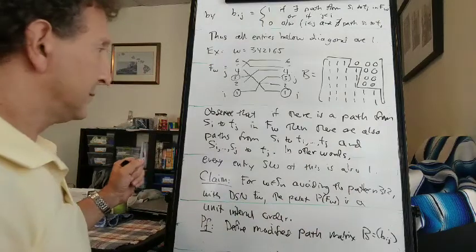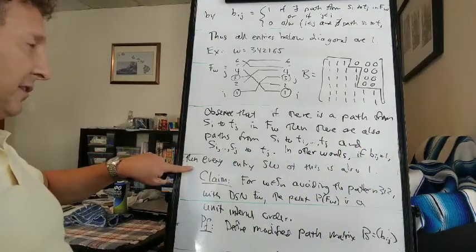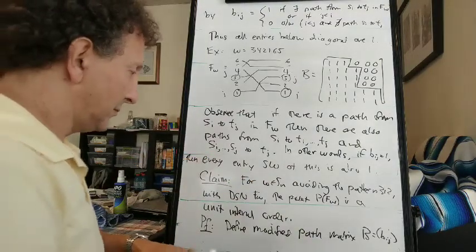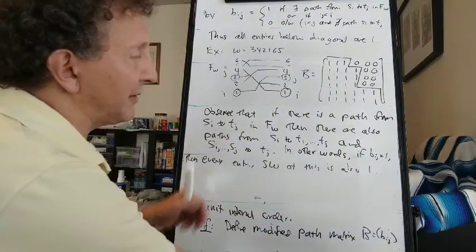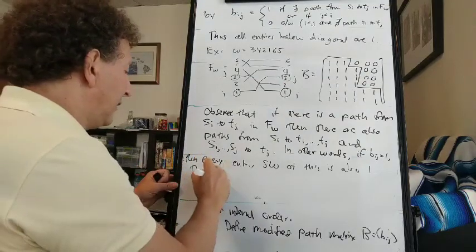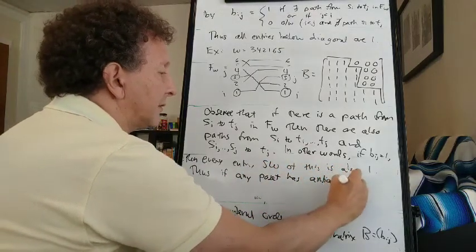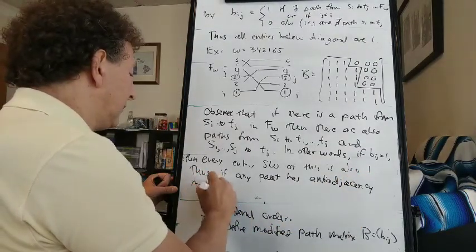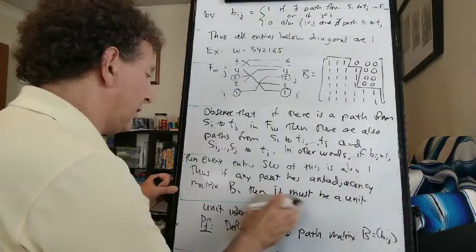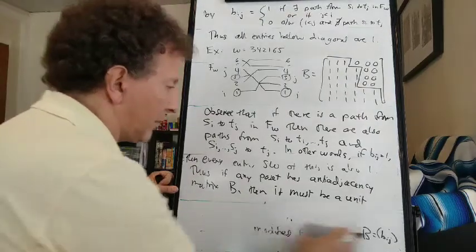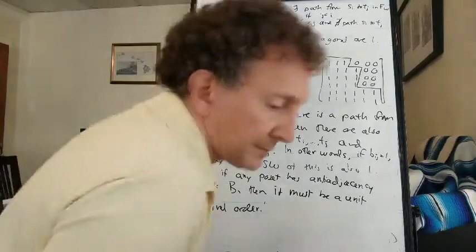So in other words, if B_ij equals one, then every entry southwest of this is also one. So our matrix, this modified path matrix, does have that special one-zero lattice path property. So that means that if any postset has anti-adjacency matrix B, then it must be a unit interval order.